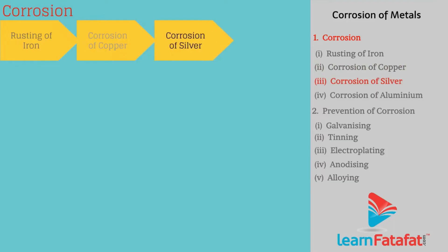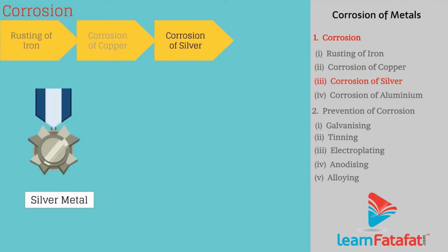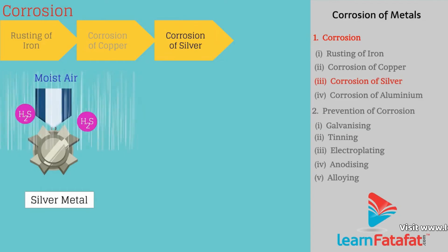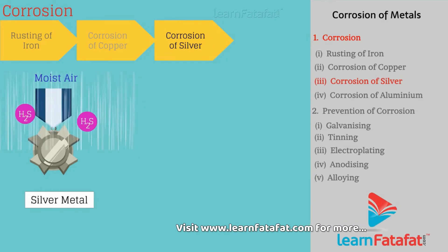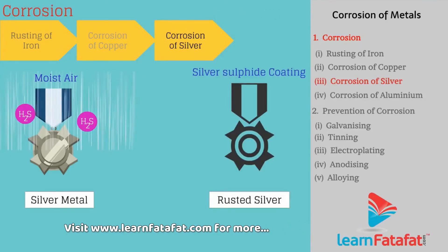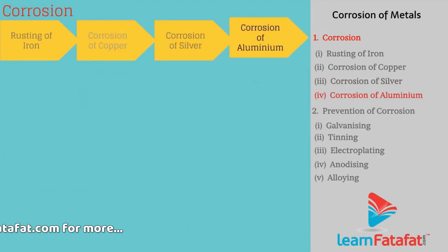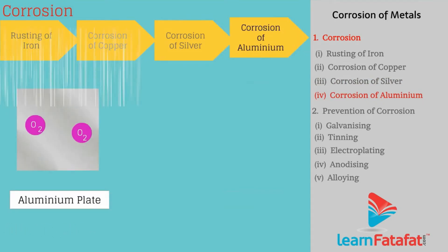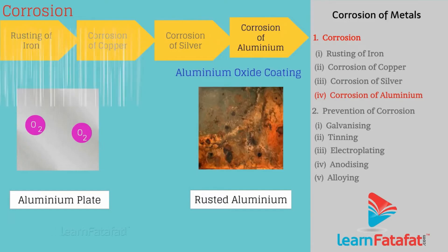Corrosion of silver. When silver articles are exposed to air for a long time, they react with hydrogen sulphide present in air and form a black coating of silver sulphide. Corrosion of aluminium. Aluminium reacts with atmospheric oxygen and forms a thin layer of aluminium oxide. This layer prevents further corrosion.